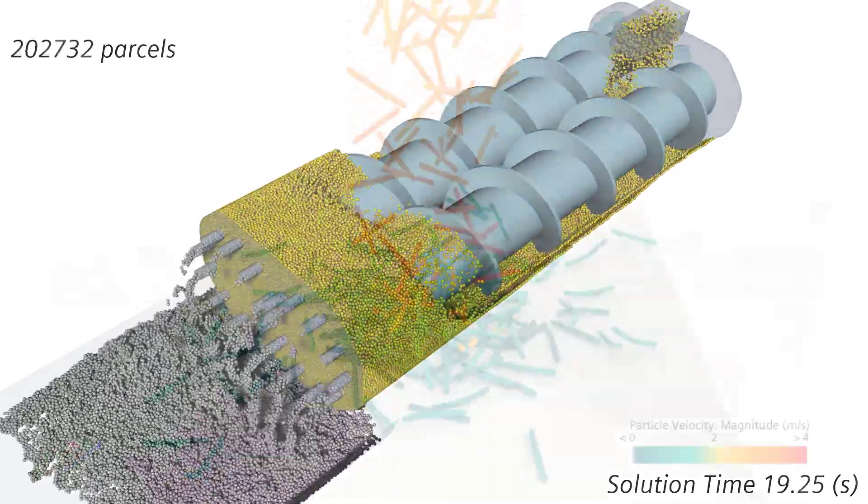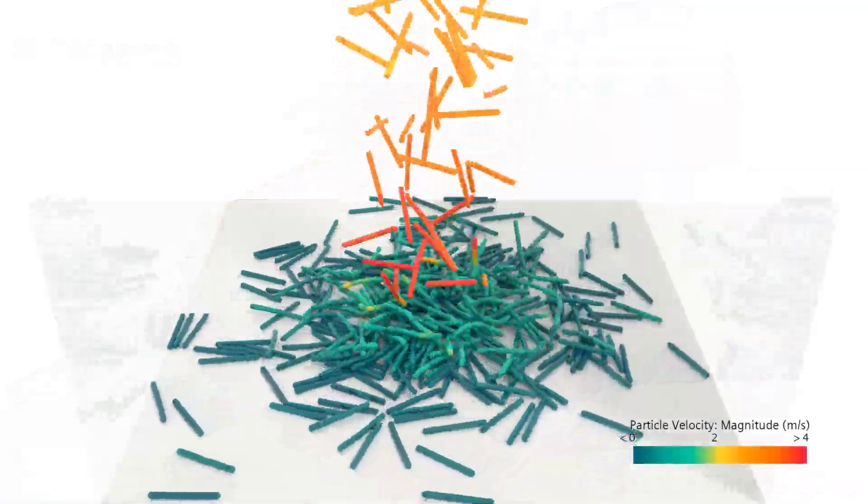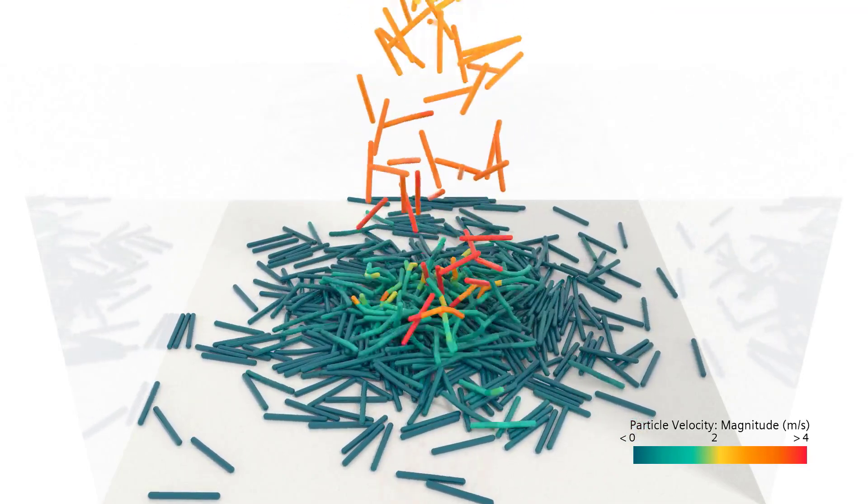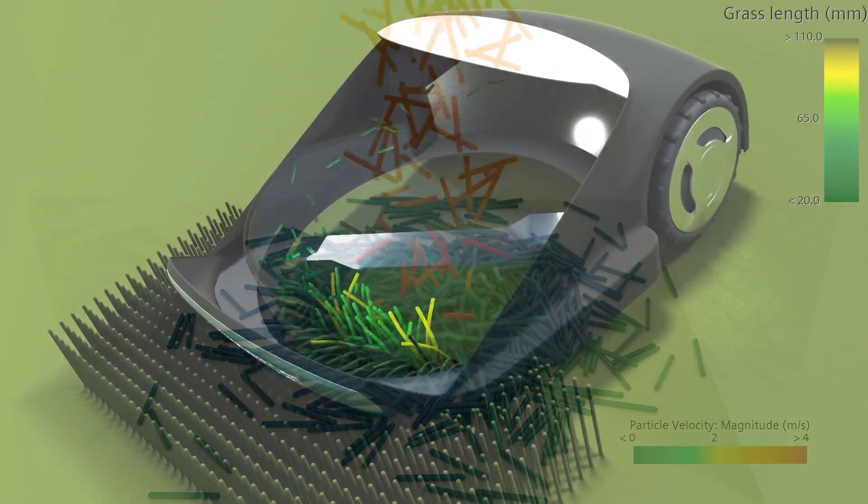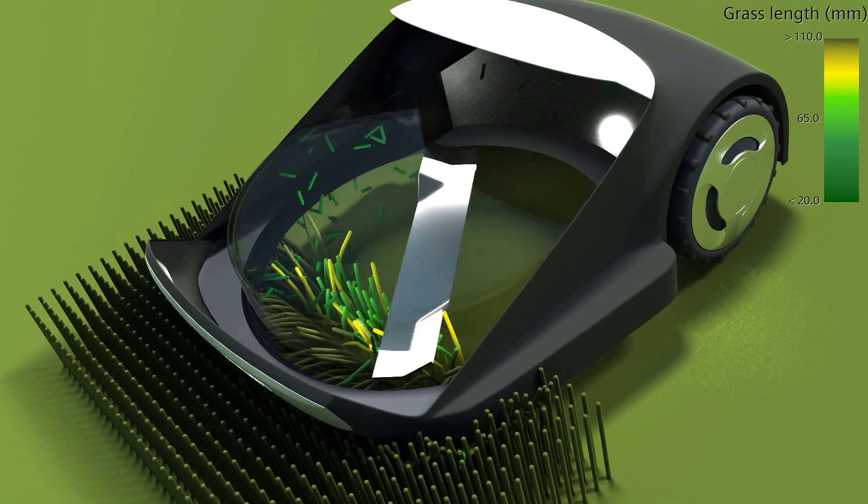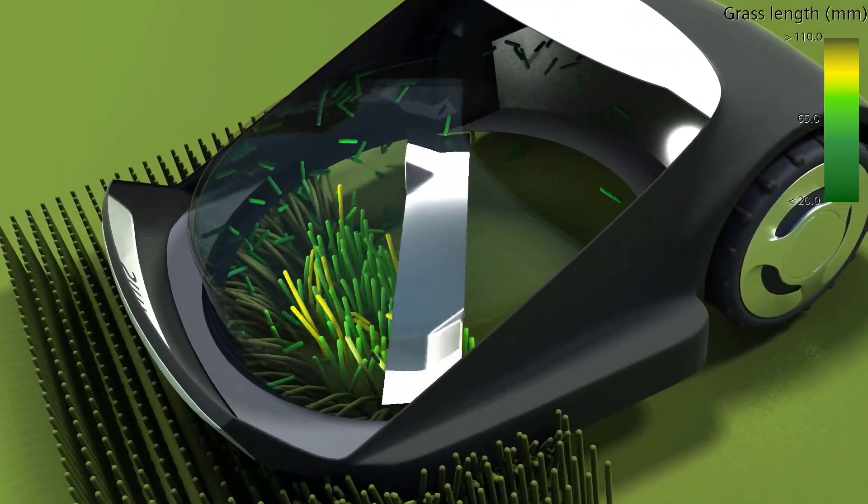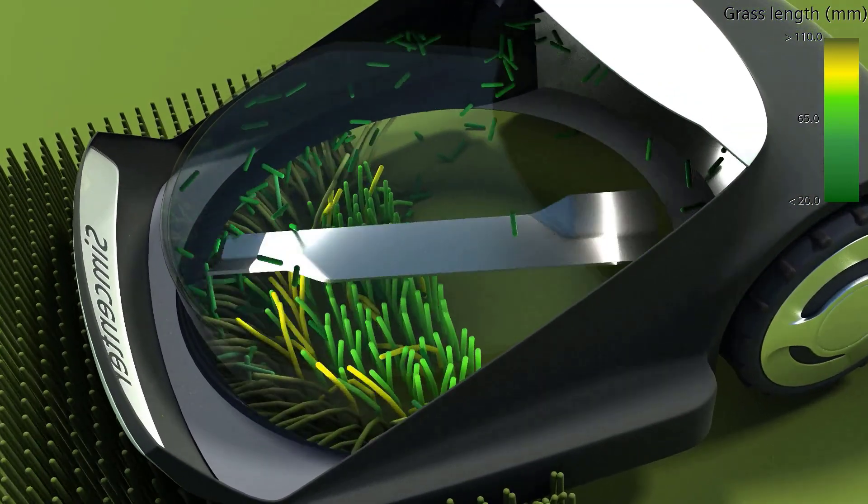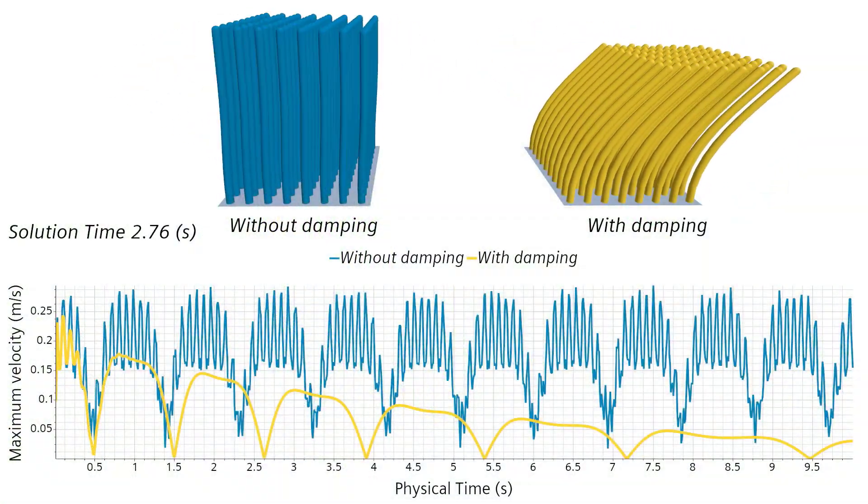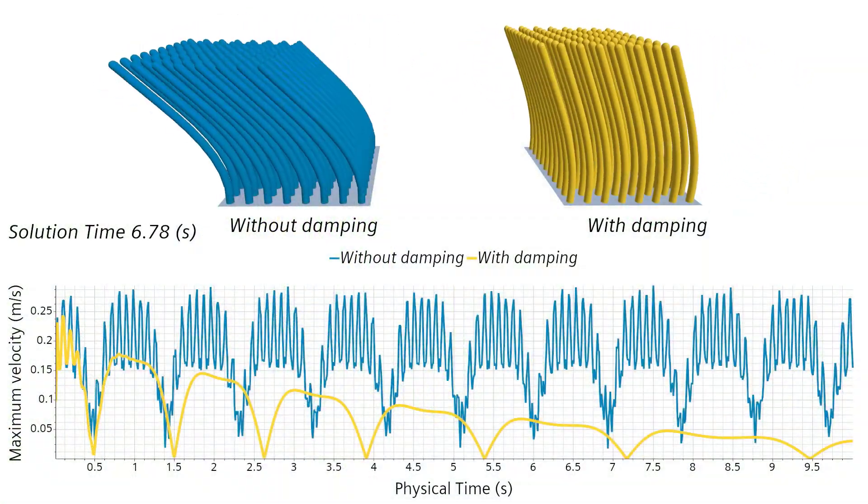Over the last releases we introduced flexible fibers, made those compatible with Mesh Free DEM and added fiber breakage capabilities. With Simcenter STAR-CCM+ 2210, we continue those enhancements with velocity damping physics at the location of bonds between fiber segments.